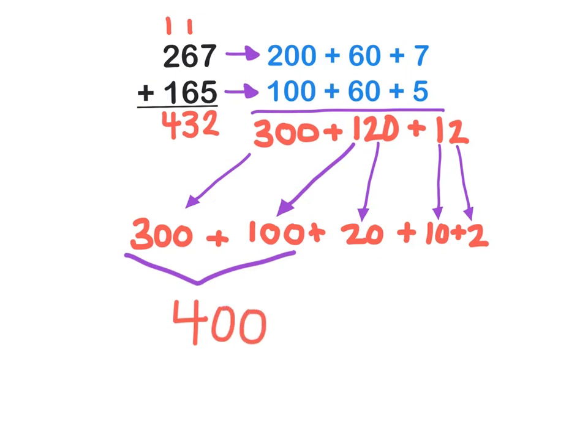Okay, then I'm going to combine my tens, 20 and 10, which makes 30. And I have a 2 left over, which I will write here.